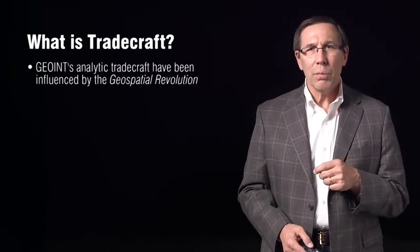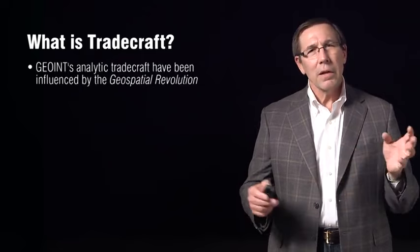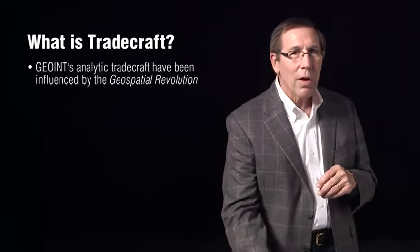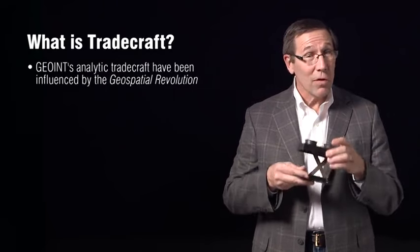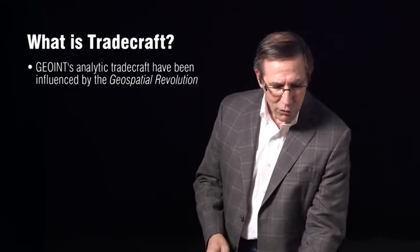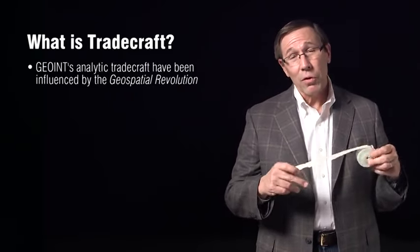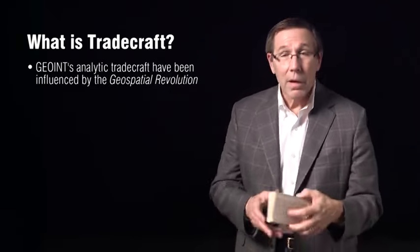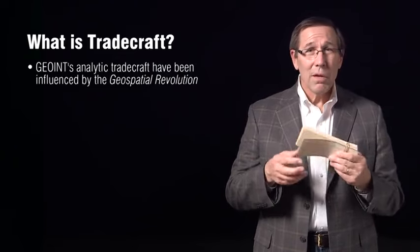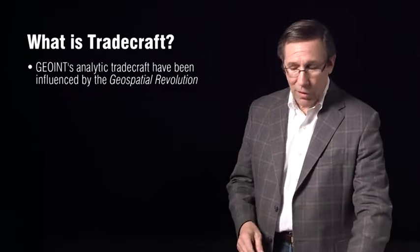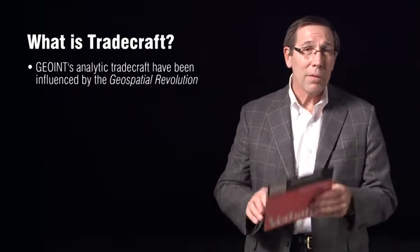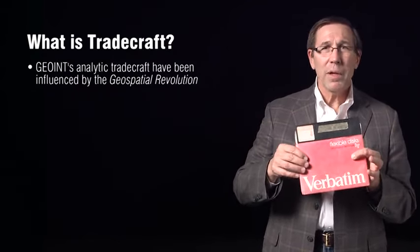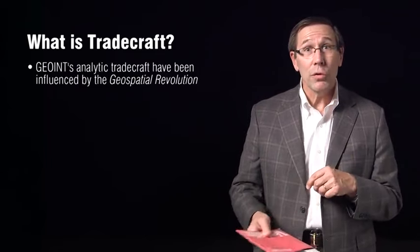GeoInt's analytic tradecraft has been particularly influenced by the geospatial revolution. Let me show you, over a time period of about 30 years, how things have changed. When I started out, we used a stereoscope — now this is done electronically. Here's a punch paper tape I used years ago; those little punches are data encoded on them. 80-column punch cards were state of the art in the 1980s. Or how about this floppy disk. These changes, particularly in data storage and processing speed, have allowed the geospatial revolution to occur.